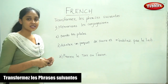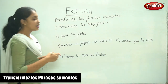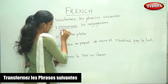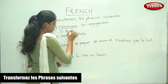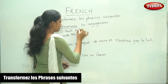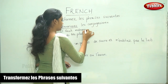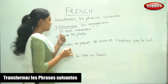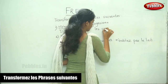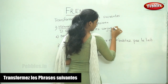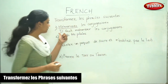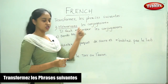So now, first you have to look at the sentence. What is the verb? Mémorisons. So, il faut and the infinitive of the verb: Mémoriser. Il faut mémoriser les conjugaisons.